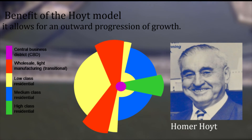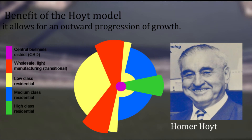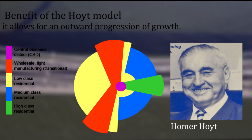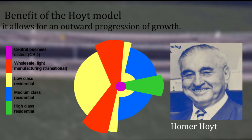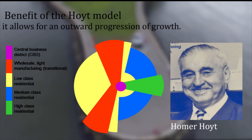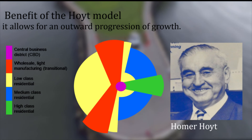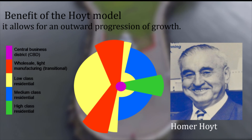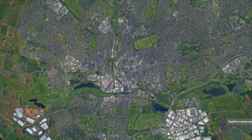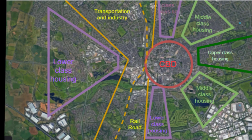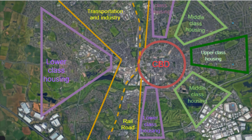Moreover, this model applies to numerous particular cities. For example, let's look at Northampton with a population of 215,000 people. After a little bit of analyzing and comparing, we applied the model onto our map, which as a result fitted perfectly.